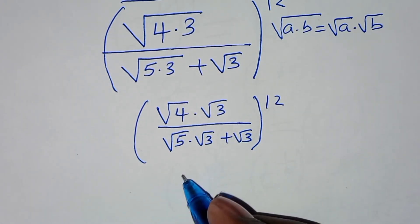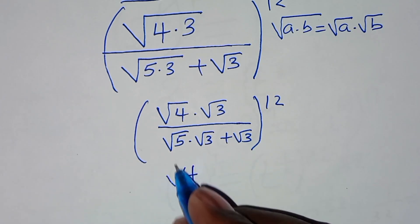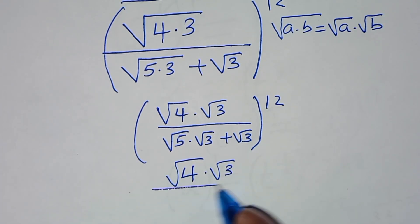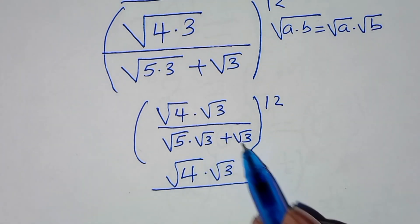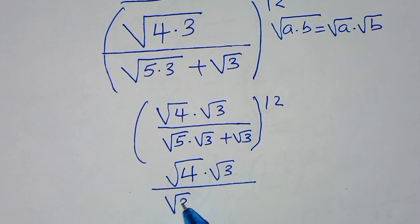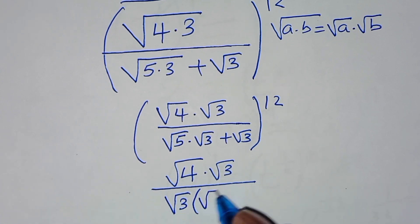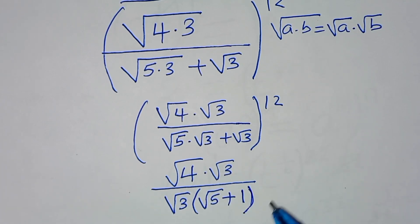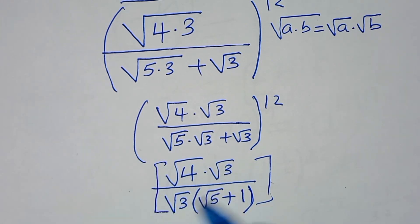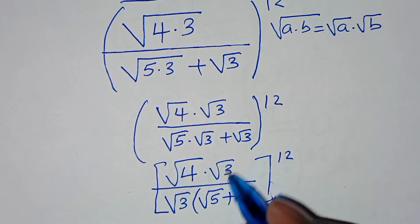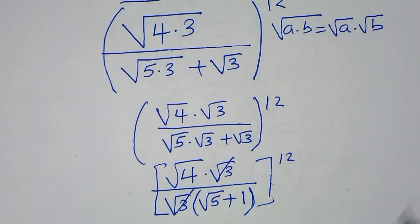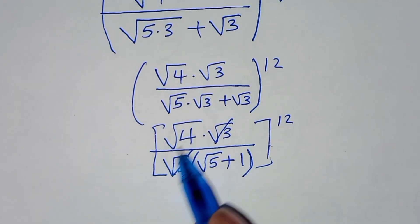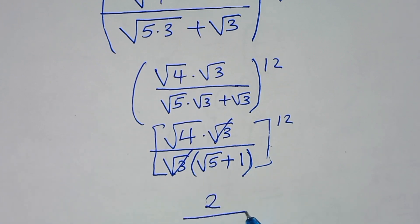In the numerator we have square root of 4 multiplied by square root of 3. In the denominator, square root of 3 is common, so we factor out square root of 3, giving us square root of 3 into the bracket square root of 5 plus 1, raised to power 12. Square root of 3 and square root of 3 cancel, so now we have square root of 4, which is 2, divided by square root of 5 plus 1, raised to power 12.